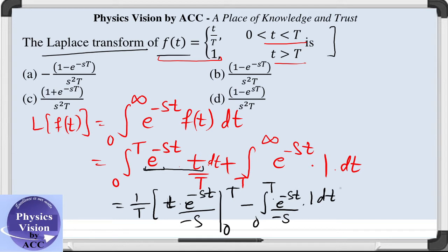This is it for the first two terms. What about the next term? That is this one. So, that is e raised to the power minus st by minus s from capital T to infinity.